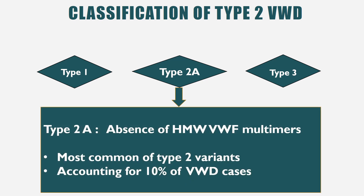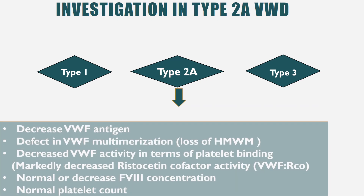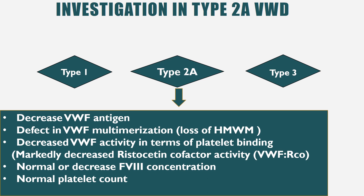In type 2a, there is absence of high molecular weight vWF multimers — this is the most common variant of type 2 and accounts for 10% of von Willebrand disease cases. Investigations show decreased vWF antigen level, a defect in vWF multimerization with loss of high molecular weight multimers, and decreased vWF activity in terms of platelet binding. However, its function as a carrier protein for factor VIII remains normal, so APTT and factor VIII concentration are normal, and platelet count is normal.